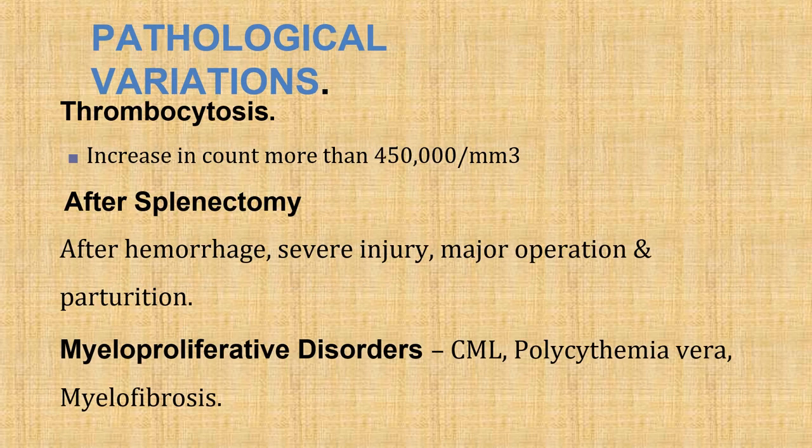Pathological variations — thrombocytosis is an increase in count above 4.5 lakhs per mm³. This occurs after splenectomy, hemorrhage, severe injury, major operation, parturition, and myeloproliferative disorders like chronic myeloid leukemia, polycythemia, and myeloid fibrosis. There is also familial thrombocytosis, iodine deficiency anemia, after surgery, and chronic infections.